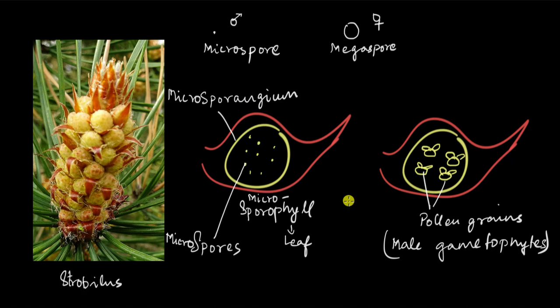They cannot produce their own nutrition. The pollen grains will of course be released when they are mature, but until they're maturing they're completely dependent on the sporophyte. And what is the sporophyte? It is the big plant that is harboring this cone or the strobilus.